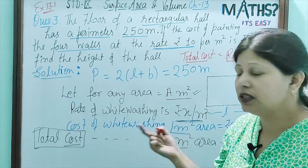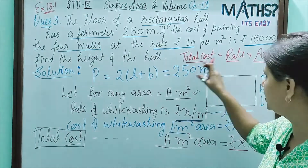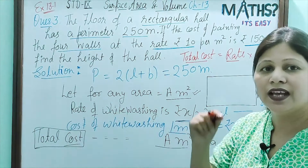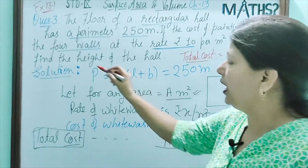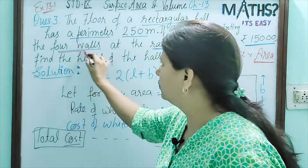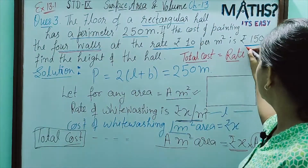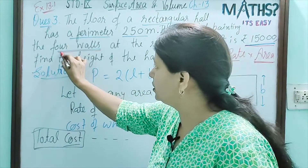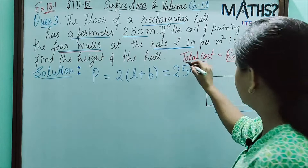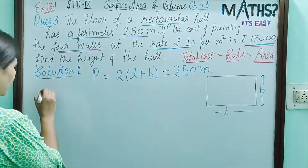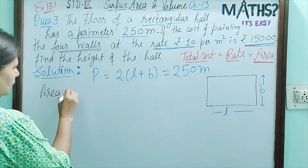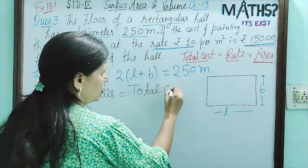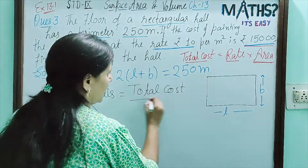But in this question, total cost is given to us and rate is given to us, and we want to find out the area — specifically, the area of four walls. So, by this formula, we can find out: Area of Four Walls = Total Cost ÷ Rate.